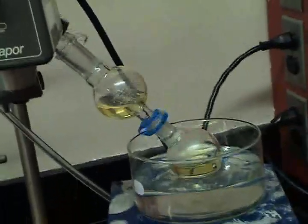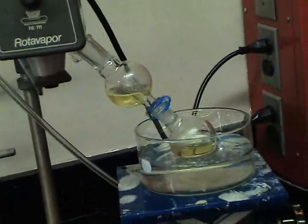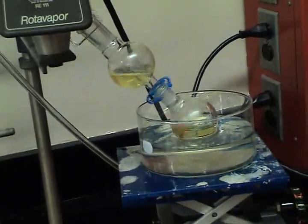Anyway, what I was saying is, the reason that it is spinning is to increase the surface area of the liquid on the sides of the flask.